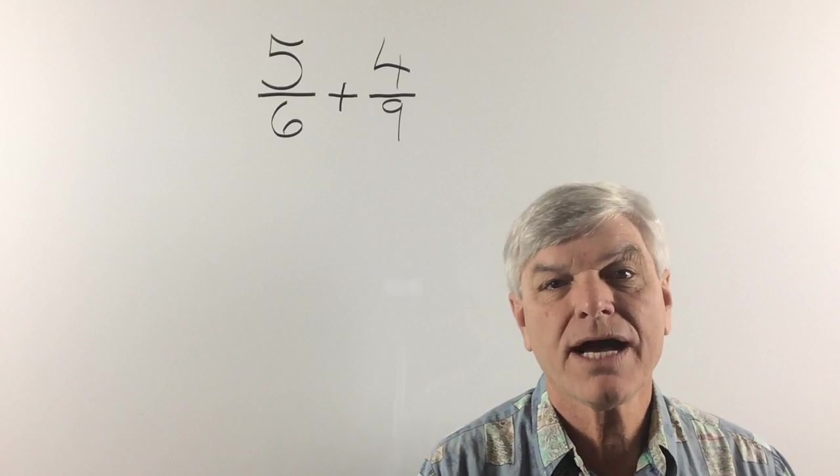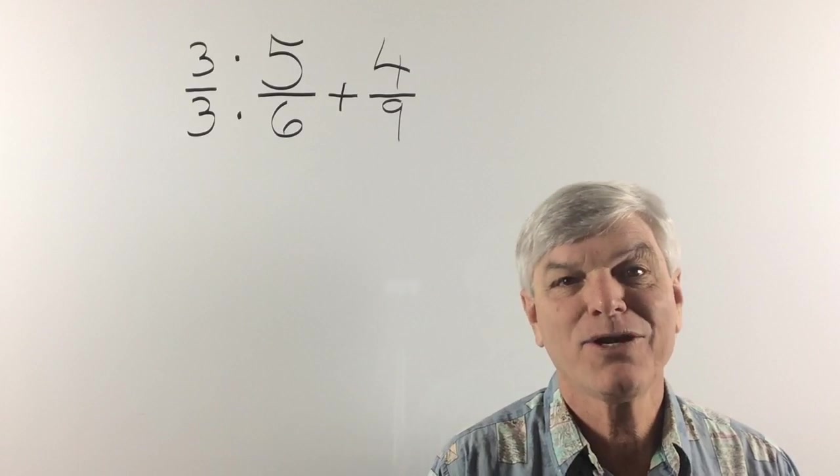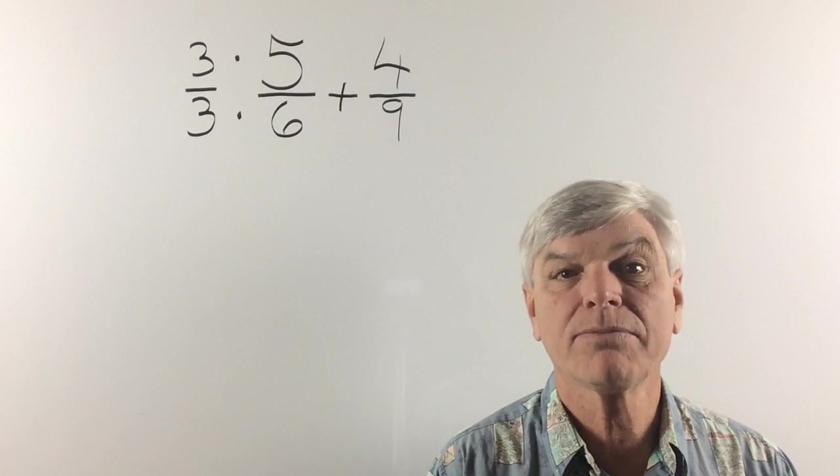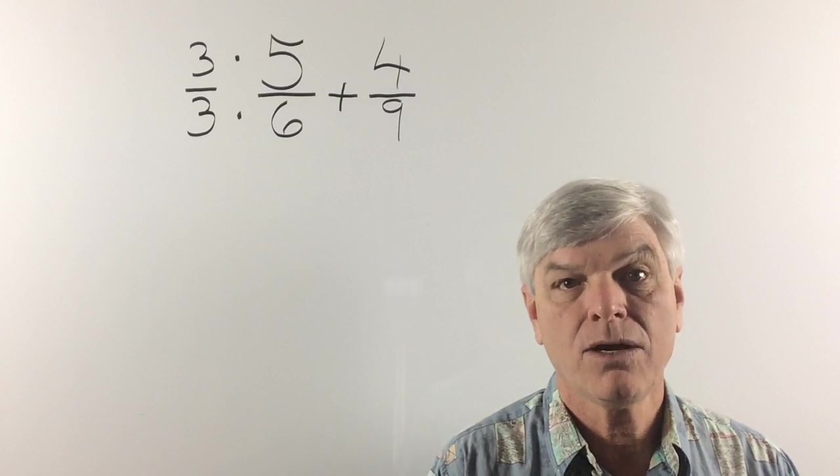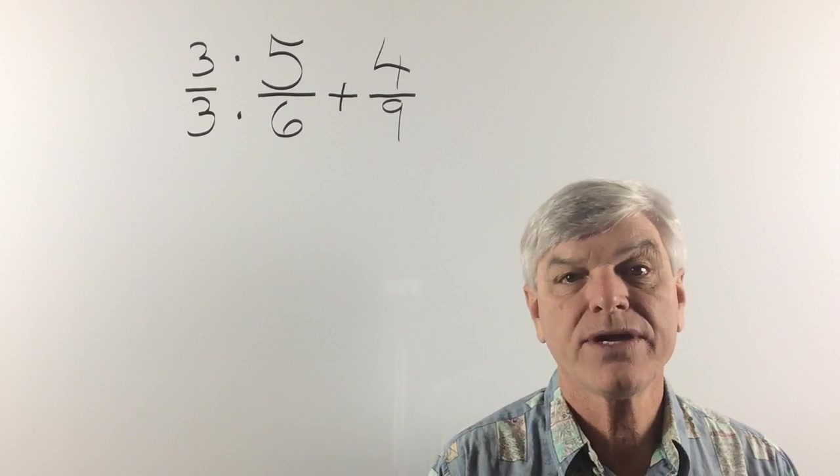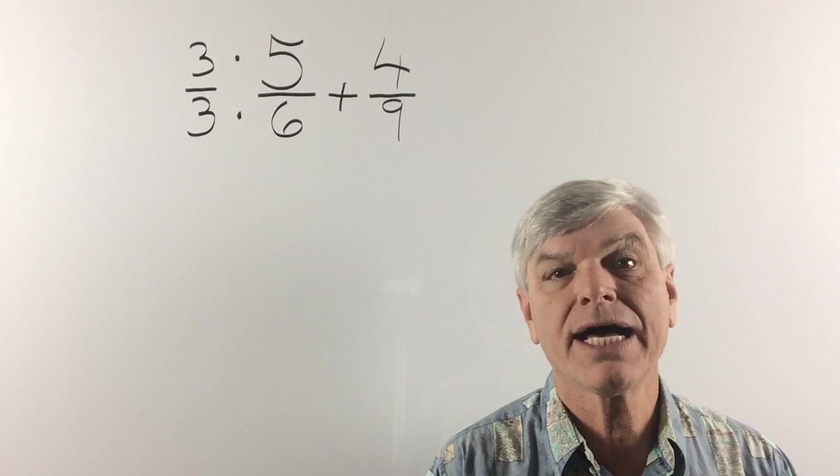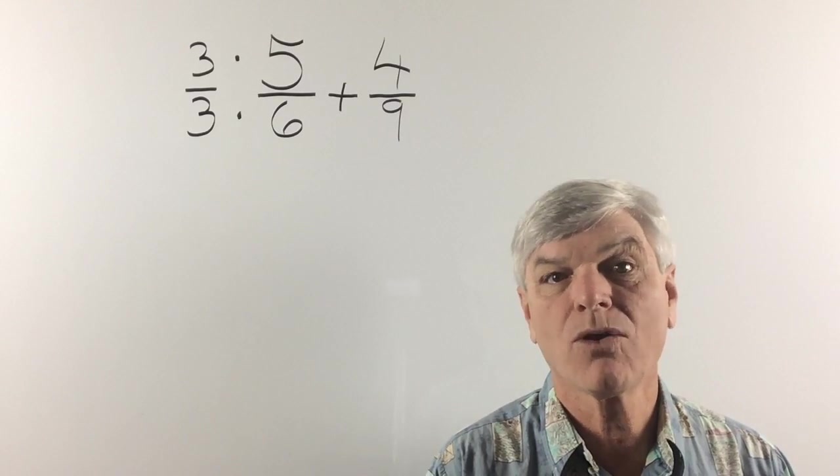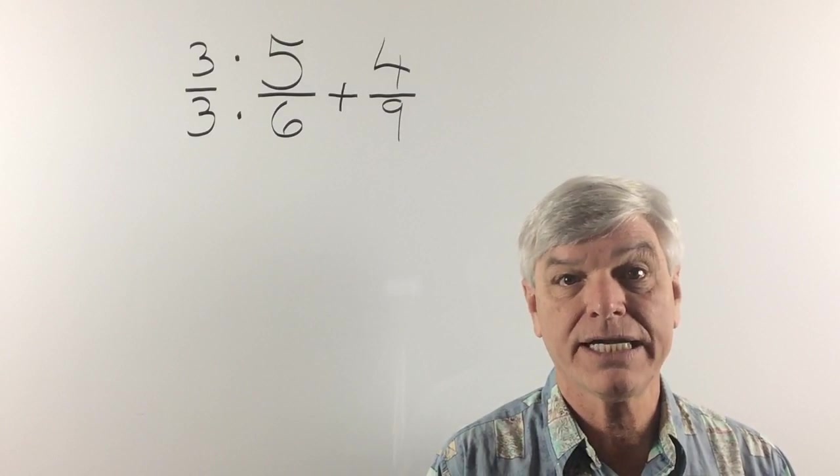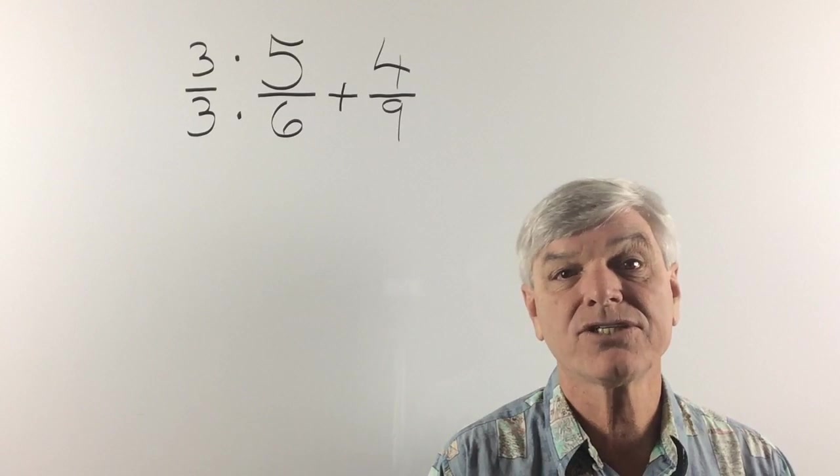So how do we get our denominators to be 18? Well we are going to multiply 6 by 3. And don't forget whatever we multiply the denominator times, we have to multiply the numerator times. That is we are multiplying our fraction times 3 over 3. 3 over 3 is 1. And as we discussed before, we can multiply any number times 1. Or divide any number times 1. And we don't change it. It's going to look different. And it's going to function in a way that we can use it. But we really haven't changed our fraction.